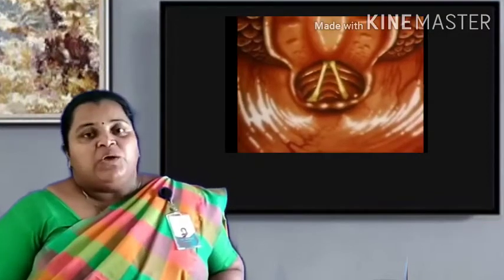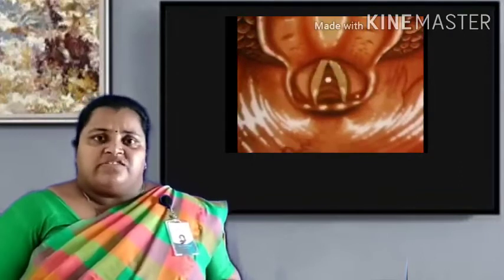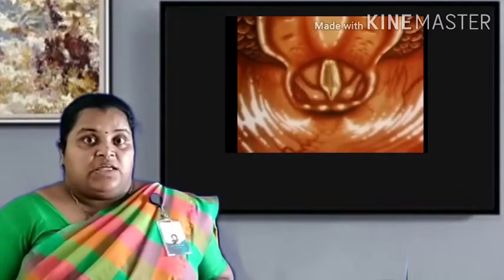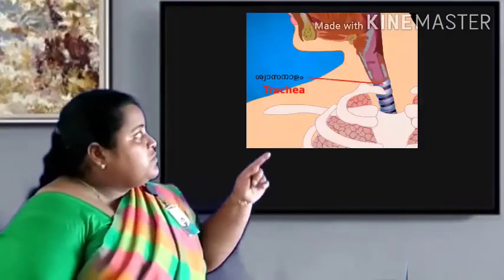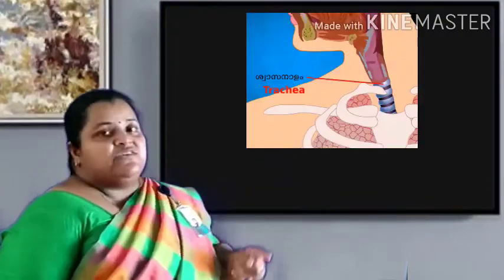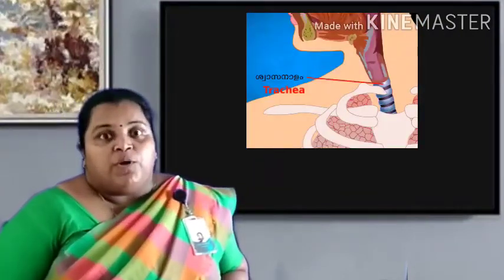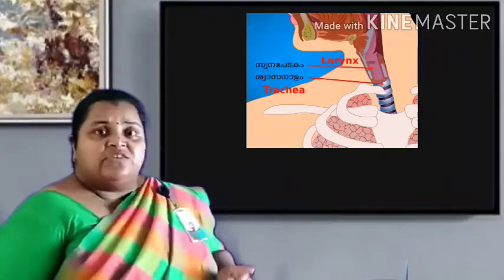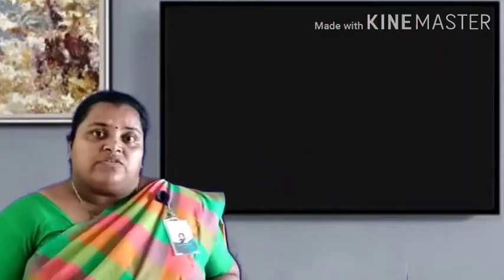Just below the pharynx, there is a muscular structure known as the larynx. When the air passes through this muscular structure, it vibrates and produces sound. So it is known as the sound box — the larynx is known as the sound box.